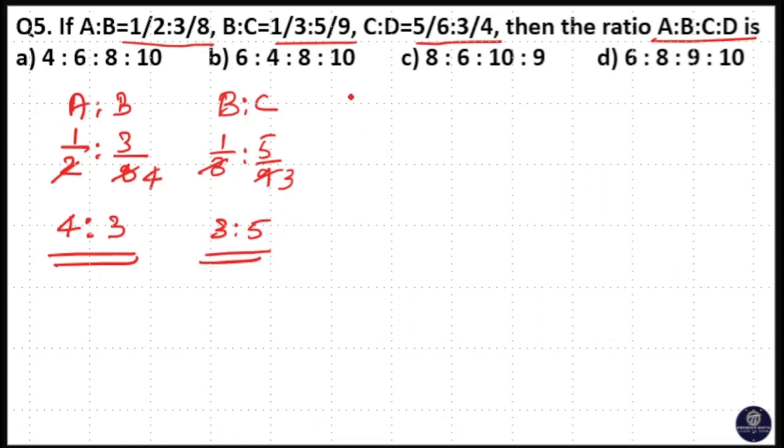Then C is to D is 5/6 is to 3/4. When you cancel this with 2, this is 3, this is 2. So when you cross multiply, you will get 5 into 2, 10. 3 into 3, 9. So 10 is to 9 is C and D.